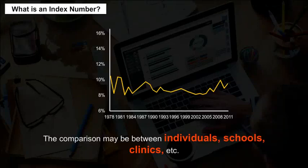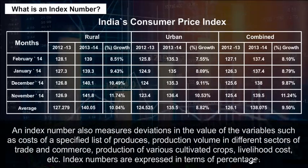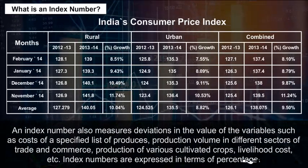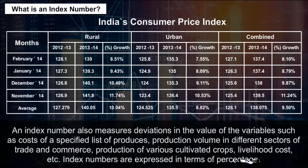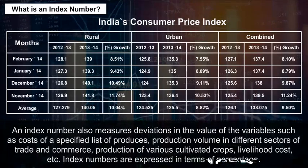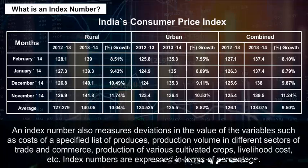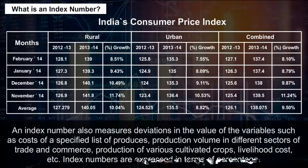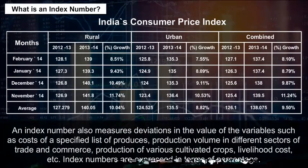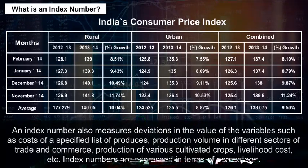The comparison may be between individuals, schools, clinics, etc. An index number also measures deviations in the value of variables such as costs of a specified list of producers, production volume in different sectors of trade and commerce, production of various cultivated crops, livelihood cost, etc. Index numbers are expressed in terms of percentage.